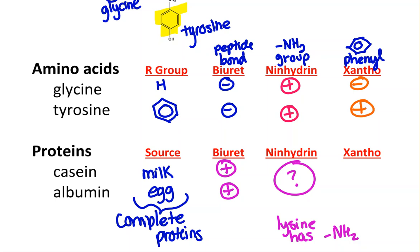Lastly, the xanthoprotein test actually detects the phenyl group, and because both of these are complete proteins, they have the amino acids with the phenyl group, so they should both test positive.